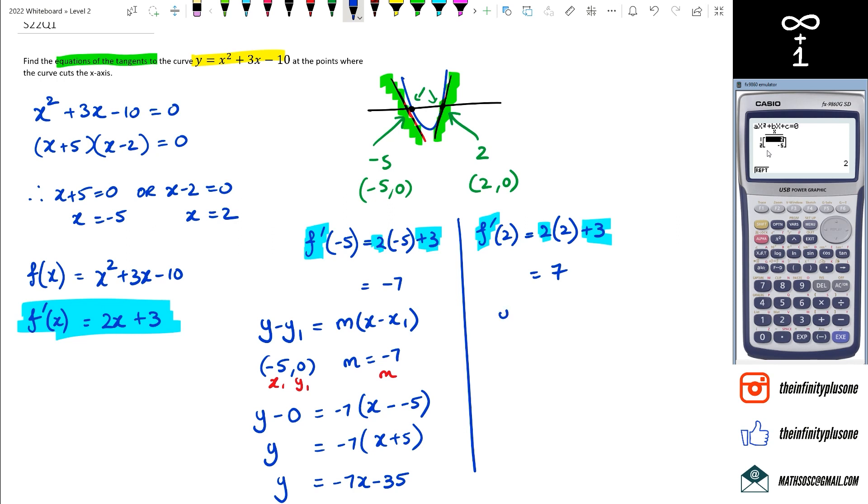And the second one, I'm still going to use y minus y1 equals m times x minus x1. Now some people say, hey, can I just use y equals mx plus c? So I'm going to show you that method here as well. So yeah, you can use y equals mx plus c to figure out what the c value is. And that's what we're going to do in this case. So our points in this case is 2, 0, and m is equal to 7.